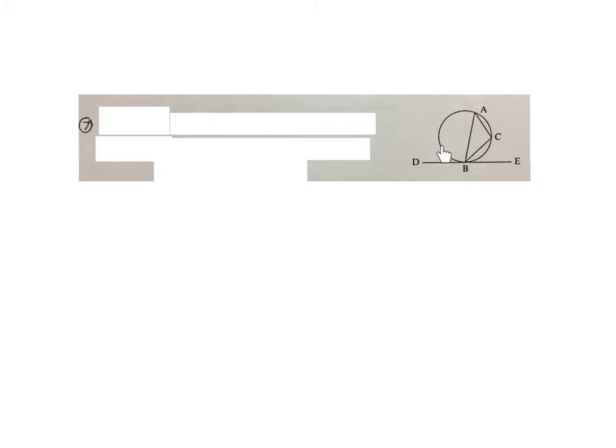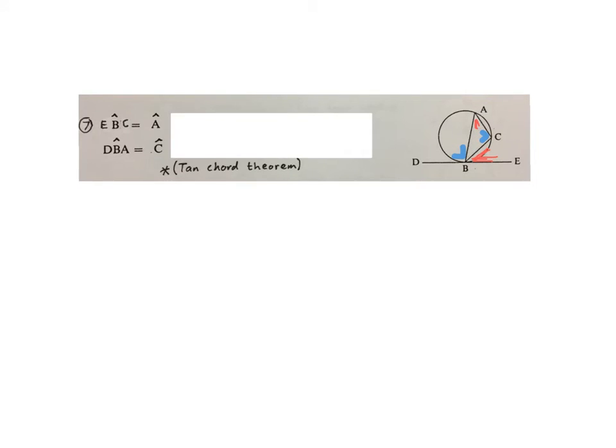Now they're giving us a circle with tangent DBE, chords BC and chords BA. And we connect it AC. Then we know angle EBC is equal to angle A. Our reason, tan chord theorem. Also angle DBA is equal to angle C. The two blue angles. Tan chord theorem. So we sometimes write tan DB chord AB that you can see what you're working with. But for both of them, we're going to rather write tan chord theorem.